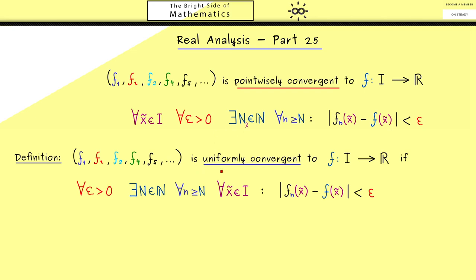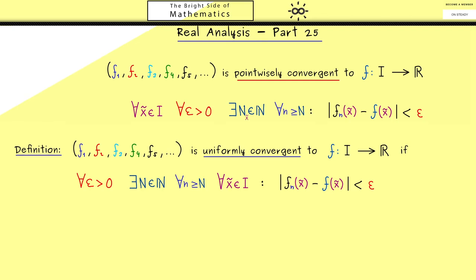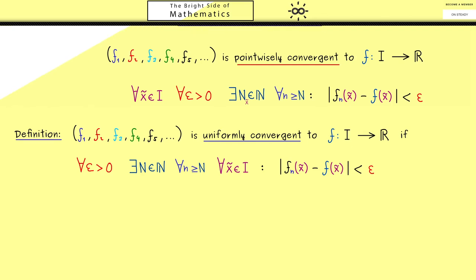However, for the uniform convergence, this N here has to work for all x tilde at the same time. And exactly this is the reason we call it the uniform convergence. And please keep in mind, this new order for the quantifiers changes a lot.